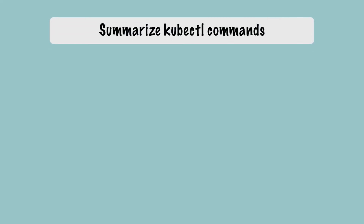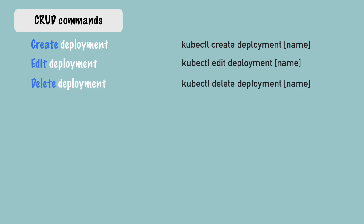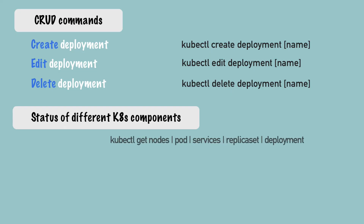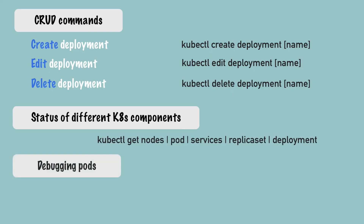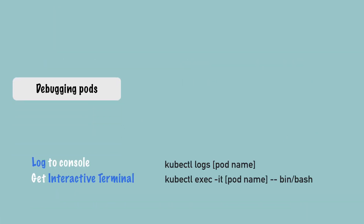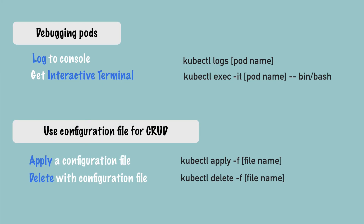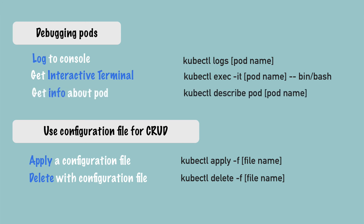To summarize, we've looked at several kubectl commands in this video. We saw how to create a component like deployment, how to edit it, and delete it. We saw how to get the status of pods, deployments, and replica sets. We logged what an application is writing to the console in the pod. We saw how to get a terminal of a running container using kubectl exec. We saw how to use a Kubernetes configuration file to create and update components using the kubectl apply command. And finally, we saw the kubectl describe command for getting troubleshooting information about a pod when a container isn't starting.